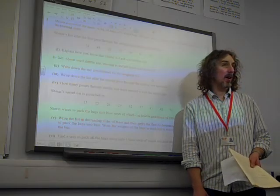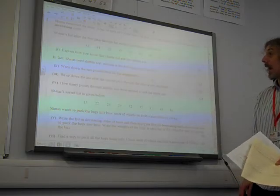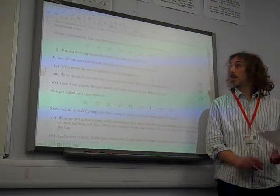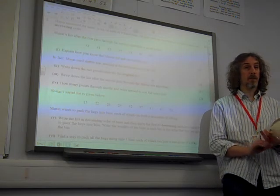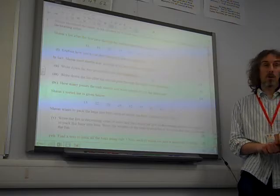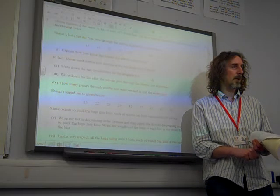It's a slightly unusual start to a question, isn't it? Because we've not seen the original list. We're told that this is the list at the end of one complete pass. We've only got two algorithms that we're supposed to know about, the shuttle sort and the bubble sort. And one of them has a particular standout feature that happens in the first pass.